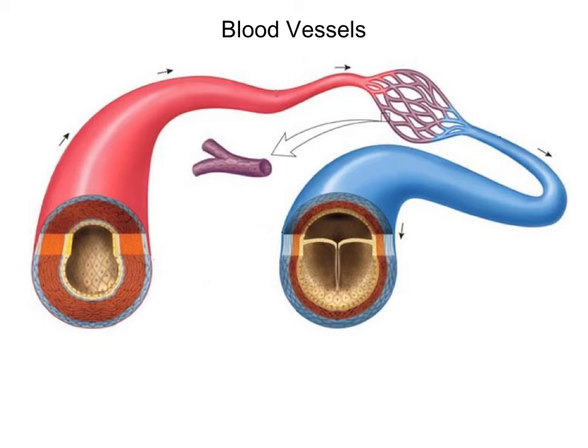In this lecture of the cardiovascular system we're going to talk about the different blood vessels and there are three different types. The first blood vessel is an artery and by definition an artery is a blood vessel that carries blood away from the heart, regardless of whether it's carrying oxygen-poor blood or oxygen-rich blood. Now 99% of the time it carries oxygen-rich blood. The 1% that carries oxygen-poor blood is in the heart and that's the pulmonary arteries.